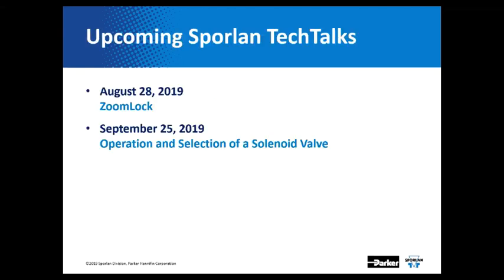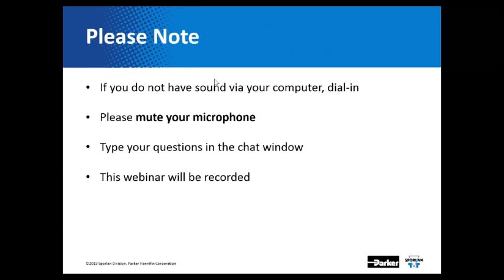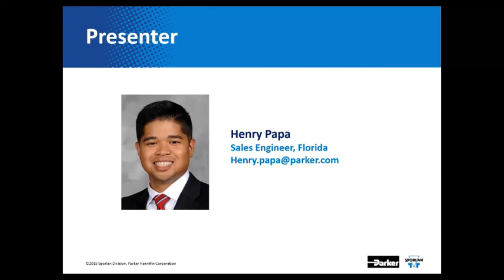It's about 2:02 Eastern, so I'll go ahead and get started. We have a couple more Sporlin Tech Talks coming up in August — we'll be talking about zoom walk — and then in September we'll end out summer with the operation and selection of solenoid valves. Please note if you do not have sound via your computer, we do have a dial-in which was included in the invite. Please mute your microphone. If you do have any questions, we have a question and answers page where you can submit them, and I'll get to them throughout the presentation. This webinar is being recorded. My name is Henry Papa — I am the Sporlin sales engineer out of Florida.